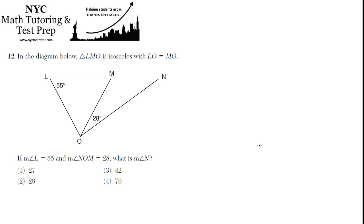Problem 12. In the diagram below, triangle LMO is isosceles with LO equal to MO. If measure of angle L is 55 and measure of angle NOM is 28, what is the measure of angle N?